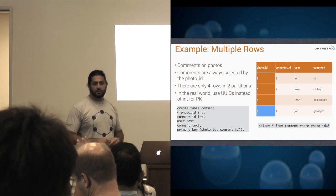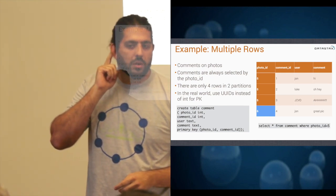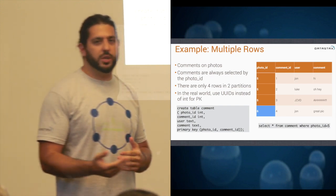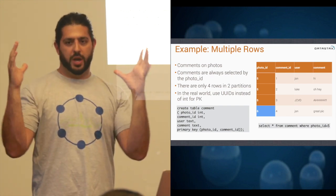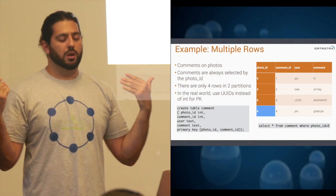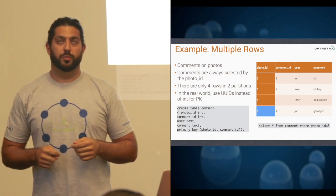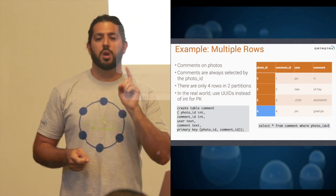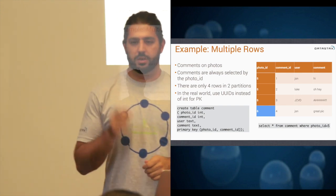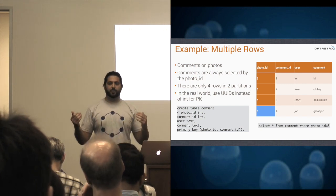Regarding storing binary payloads in Cassandra: Cassandra wasn't built initially as a giant binary store. There's a project called Pithos, which is an S3-wire-compatible object store built on top of Cassandra. You can do it, but you have to be wary of storing too much data in a single row or partition — above 100 megabytes you start to have performance problems.